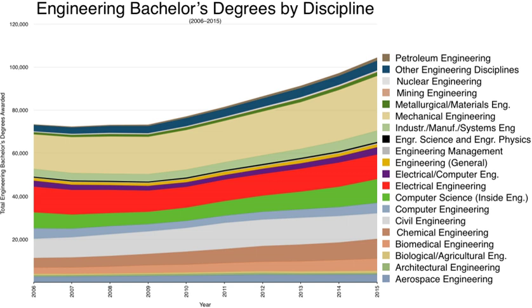The engineering profession in Hong Kong has 21 engineering disciplines, namely aircraft, biomedical, building, building services, chemical, civil, control automation and instrumentation, electrical, electronics, energy, environmental, fire, gas, geotechnical, information, logistics and transportation, manufacturing and industrial, marine and naval architecture, materials, mechanical, as well as structural engineering.